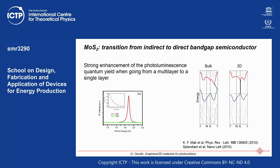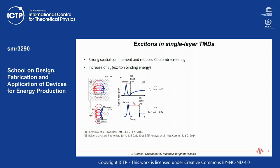Another very interesting property is that there are very strongly confined excitons with very high binding energy. In a semiconductor, you promote an electron to the conduction band and leave a hole in the valence band. The electron and hole can form a hydrogen-like system with an attraction between them — like a small hydrogen atom — called an exciton, which has a certain binding energy. In standard semiconductors this binding energy is extremely low, just a few millielectron volts, so at room temperature these excitons are destroyed by thermal energy.